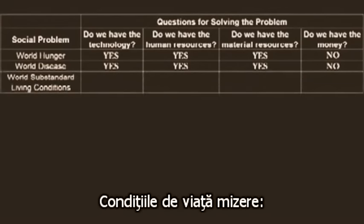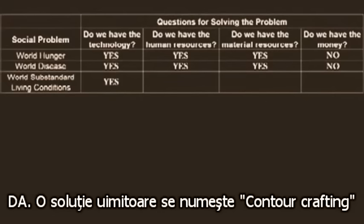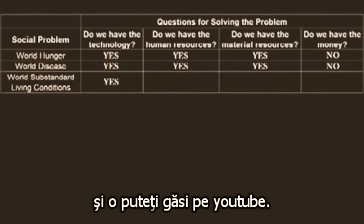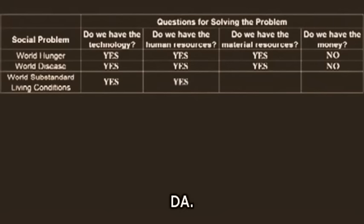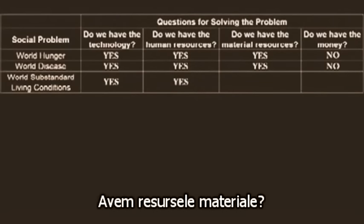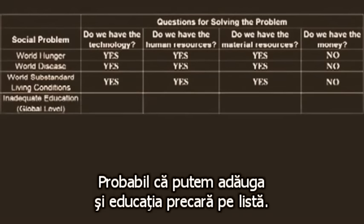World substandard living conditions. Do we have the technology to fix this? Yes. One amazing method is called contour crafting, and you can search for that yourself on YouTube. Do we have the human resources? Yes. Do we have the material resources? Yes. Do we have the money? No.